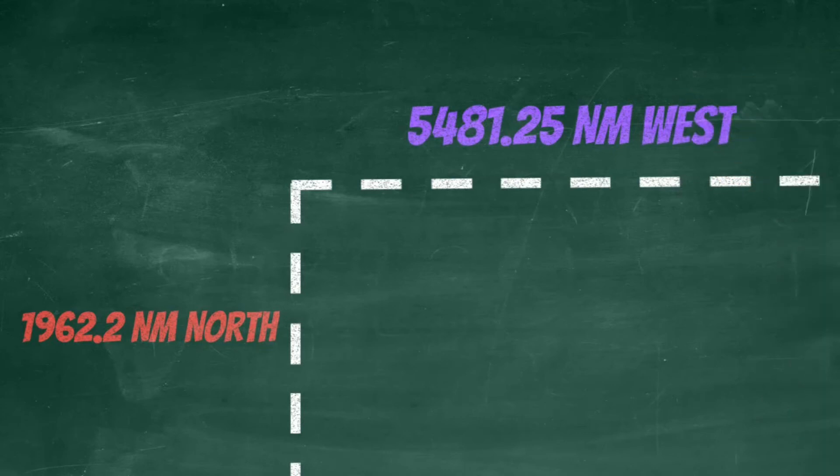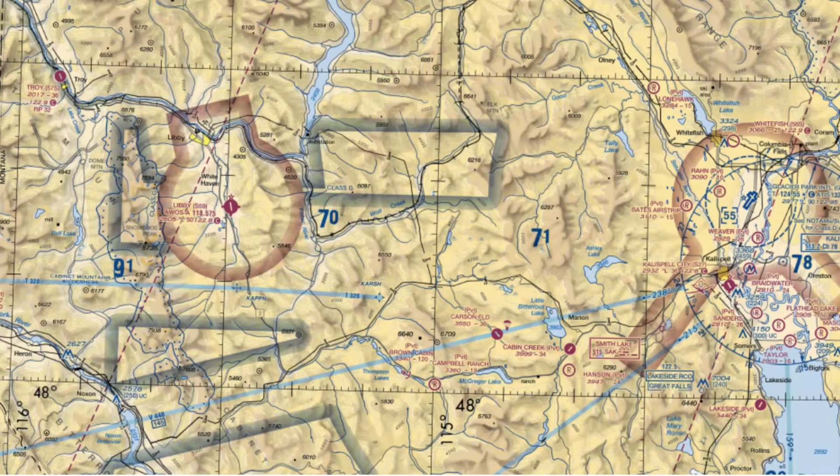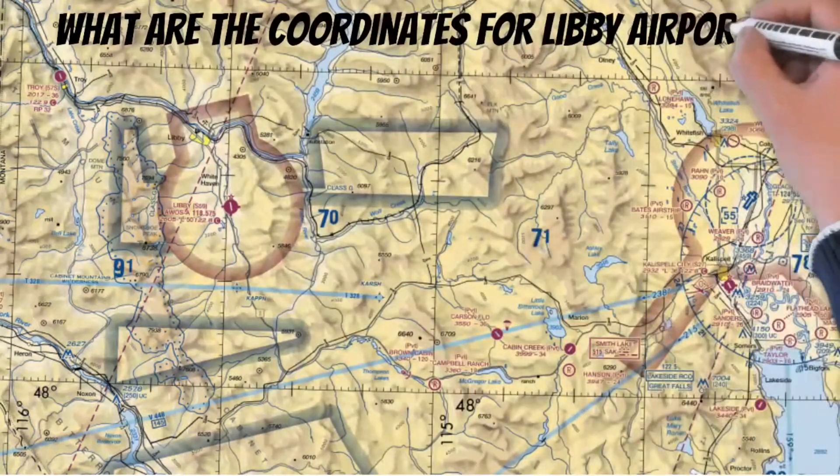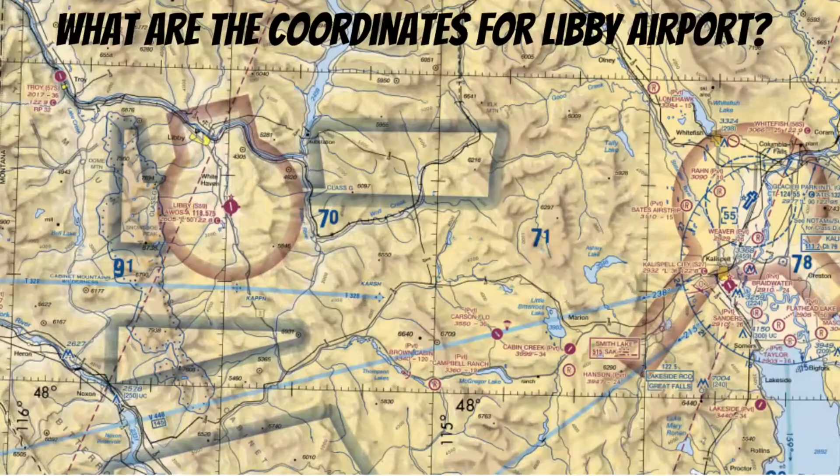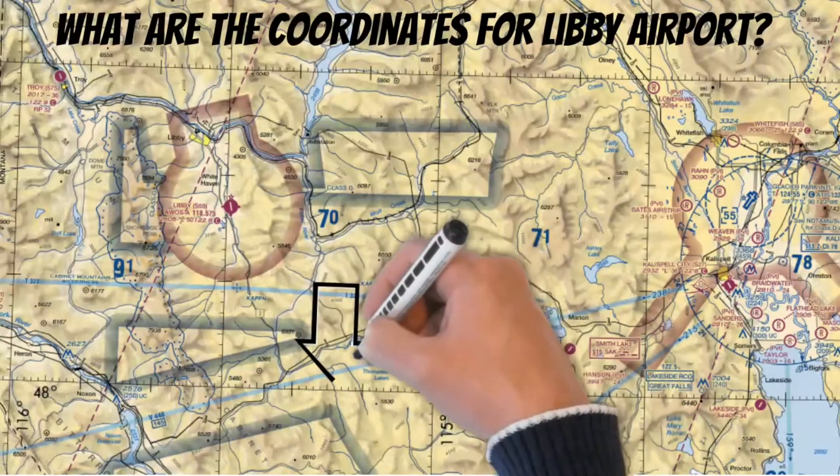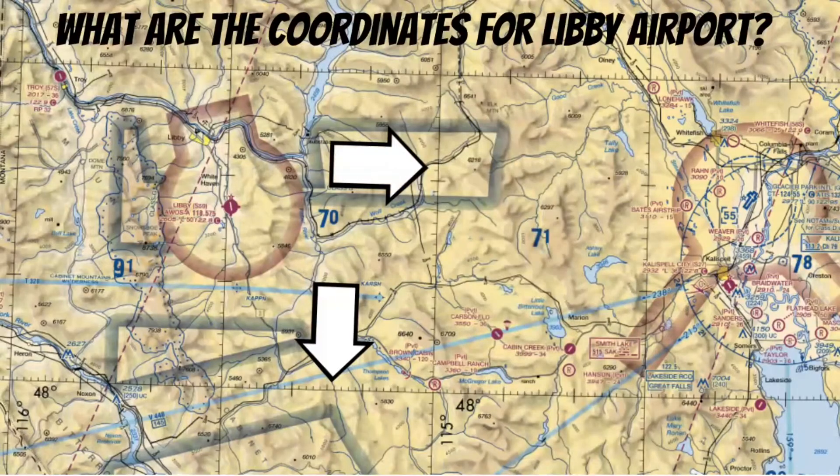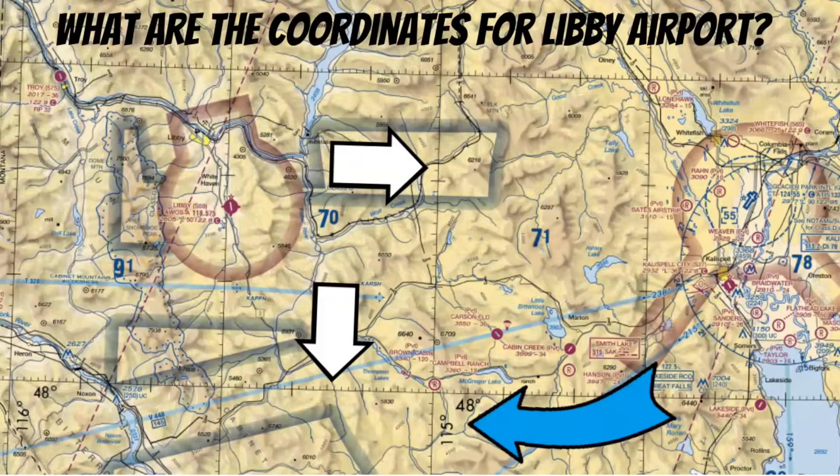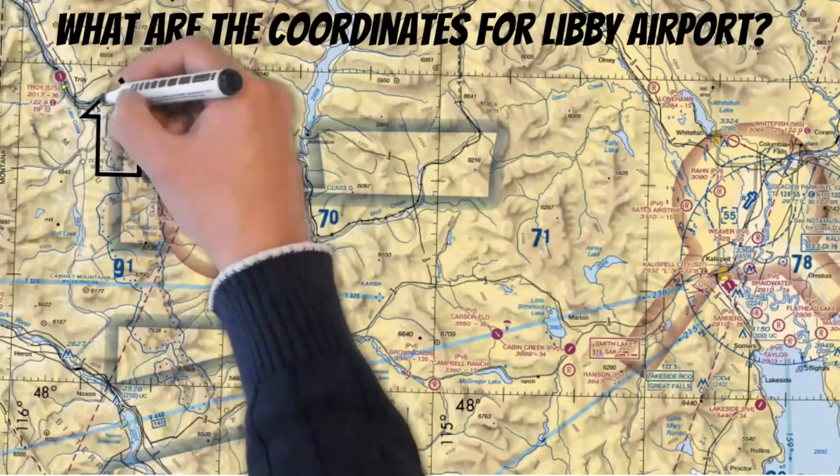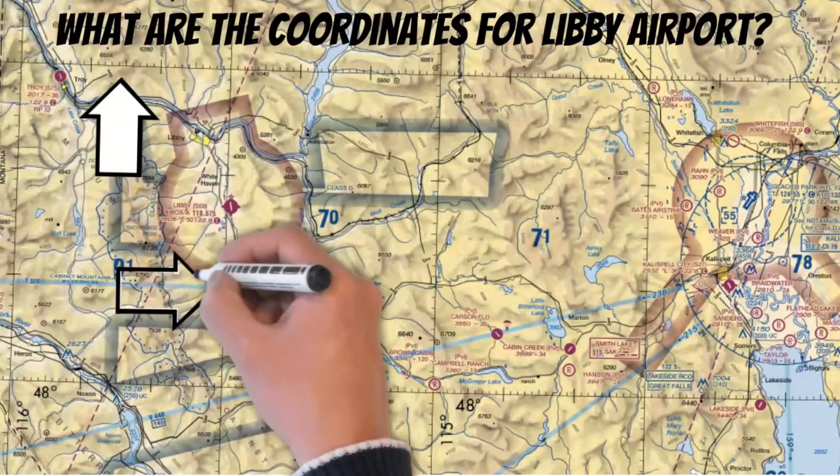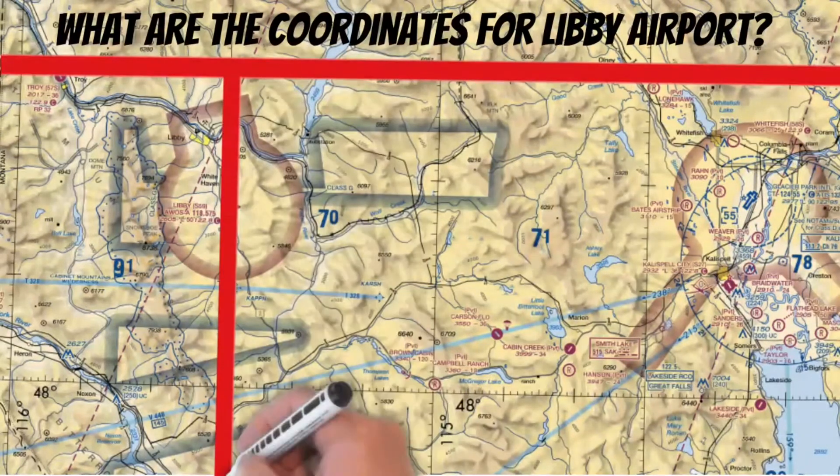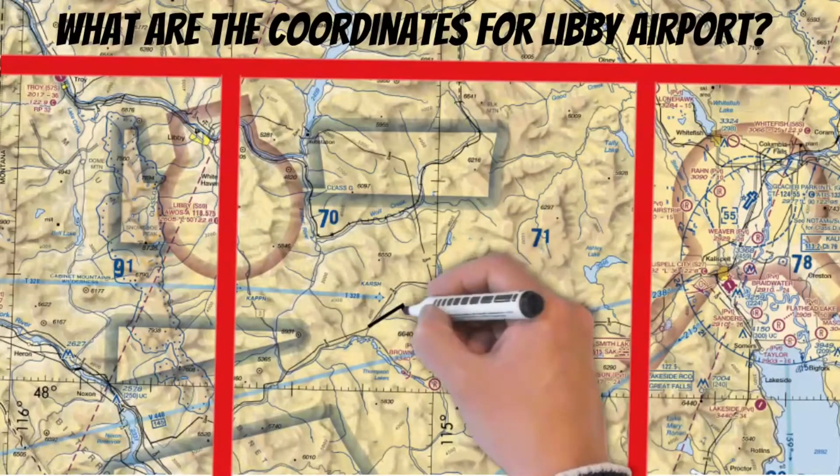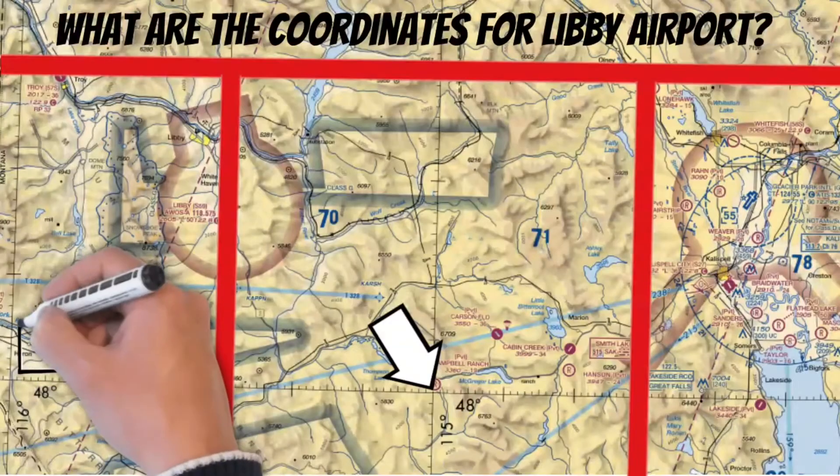Next let's pull out a VFR sectional and I'll show you how the FAA is going to ask these questions on your written exam. The first question you might see on the test is something like this: What are the coordinates for Libby Airport? Well as you can see it's right here but what are the coordinates? Now right away you probably already picked out the lines of latitude and the lines of longitude. And as you can see they're pretty obviously labeled here. But what makes this confusing is that some of these lines of latitude and longitude don't have labels so you might not be sure what the scale is. On VFR sectionals these unmarked lines of latitude and longitude are actually our 30-minute markers. This means that every other lat-long marking that you see indicates one degree of change.